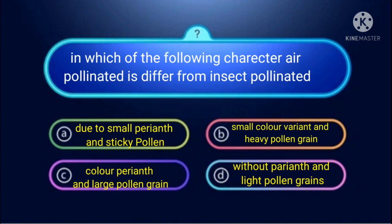Wind-pollinated plants are anemophilous — the pollen grain is lightweight so it can easily transfer through the air to different flowers. The flowers are less attractive with light color, no nectar, and lightweight pollen grains. This lightweight pollen grain is the basic character of wind-pollinated flowers.